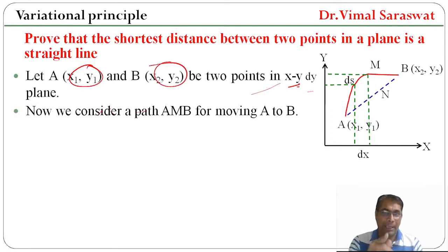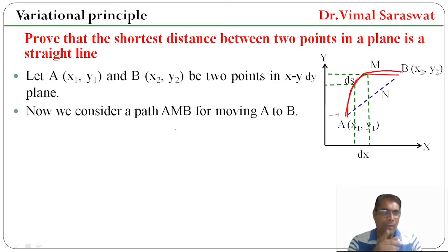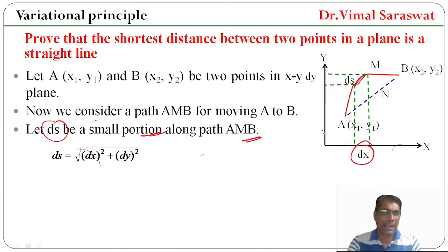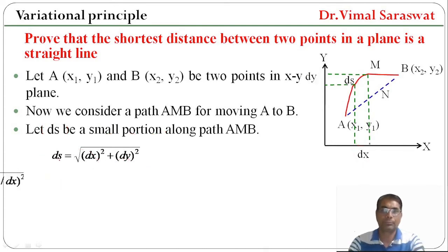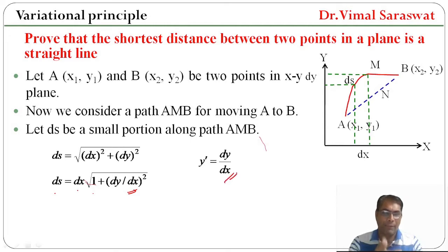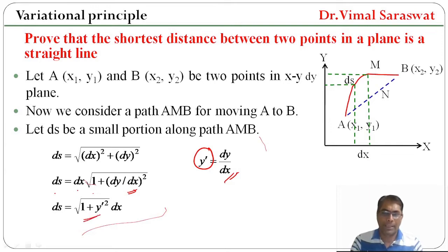Let A and B be two points in the xy-plane with coordinates (x1, y1) and (x2, y2). We consider a path A-M-B for moving from A to B. Let ds be a small portion along path A-M-B. If dx and dy are the components of ds, then ds = √(dx² + dy²) by the Pythagorean theorem. This simplifies to ds = √(1 + y'²) dx, where y' = dy/dx.